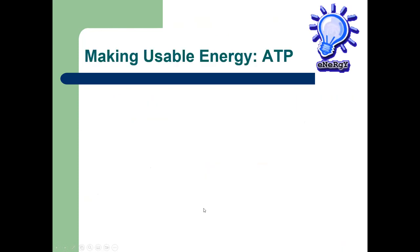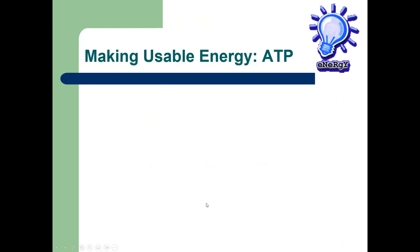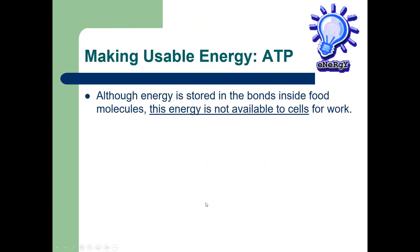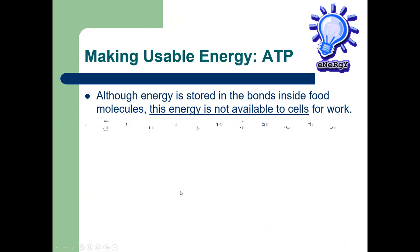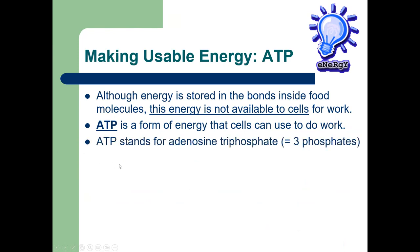One group of heterotrophs are animals, including us. The key is ATP. Although energy is stored in the bonds inside food molecules, this energy is not available to cells for work — you can't use food directly. ATP is the form of energy that cells can use to do work. You have to take food and convert it into ATP, and that process is called respiration. ATP stands for adenosine triphosphate — 'tri' means three phosphates attached to adenosine.